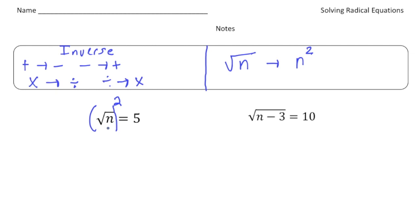Alright, but what you do to one side, you have to do to the other side. So I'm going to now square this side. So when I square this, this now just turns just into an n. And then 5 squared means 5 times 5, which is now 25. And that's your answer.